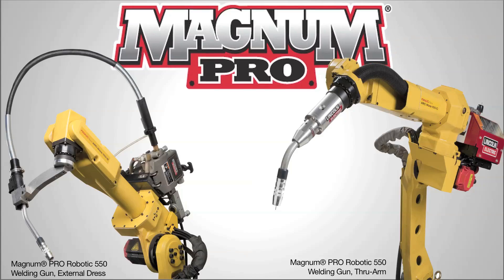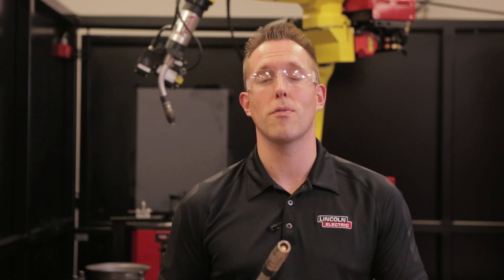These are Lincoln Electric's Magnum Pro robotic guns, the external dress and the through-arm gun. They combine a robust design with industry-leading expendable parts for a consistent, high-performing arc.